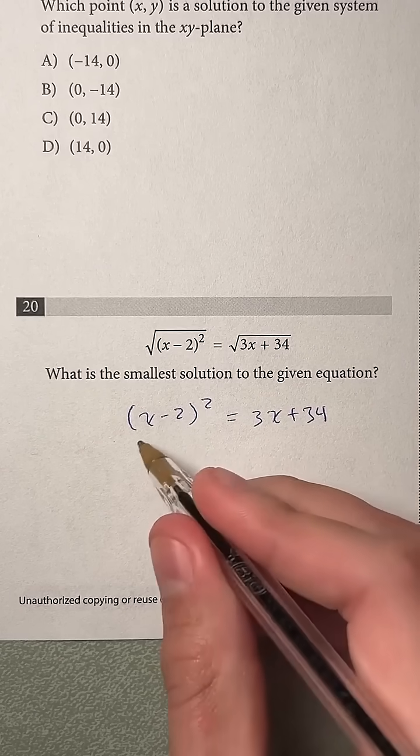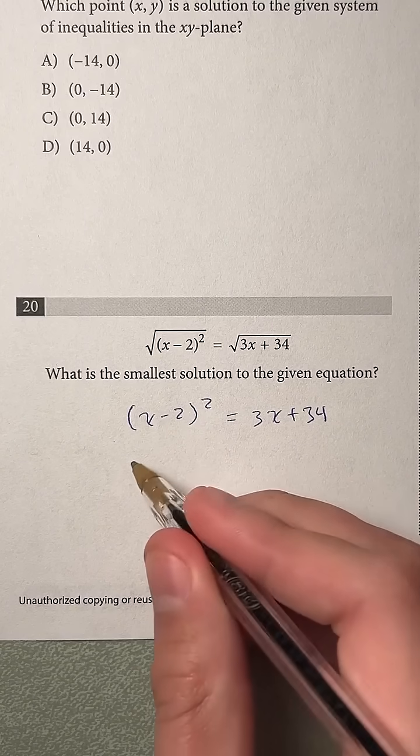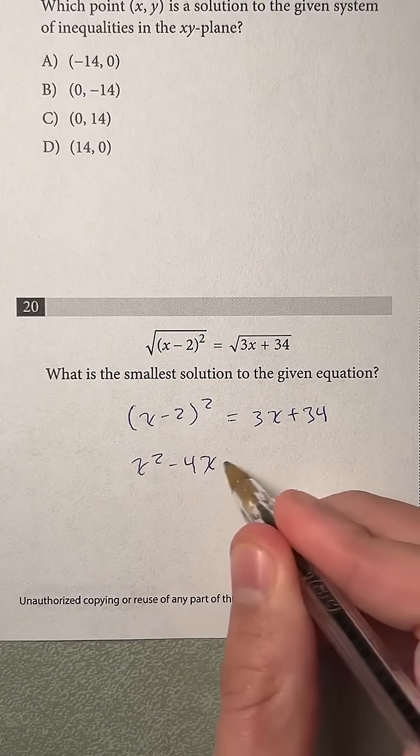Now let's distribute this left side out. So x minus 2 squared would give us x squared minus 4x plus 4,